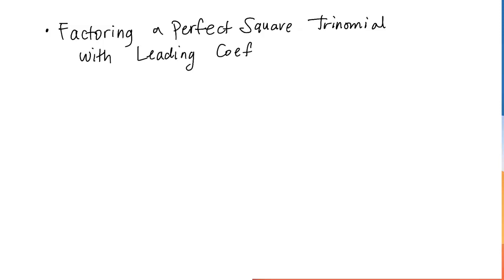This time let's go over factoring a perfect square trinomial with leading coefficients greater than 1. Write this down. Factoring a perfect square trinomial with leading coefficient greater than 1. These are the harder types, greater than 1.